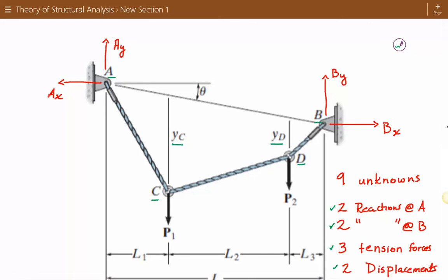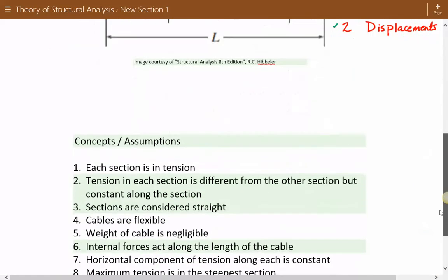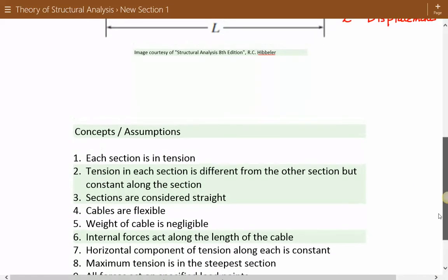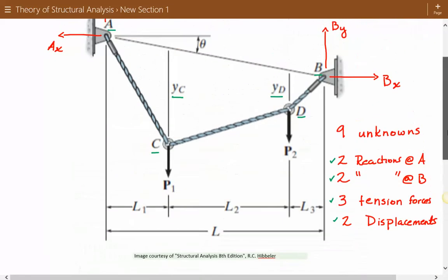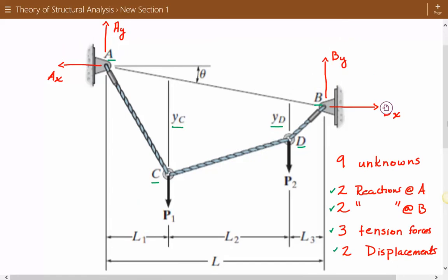If we look at all these different sections, they have tension, but the tension has two components, a vertical component and a horizontal component. The horizontal component of tension is the same in all of these sections, but the vertical component is different. And the vertical component is a function of how steep that section is.